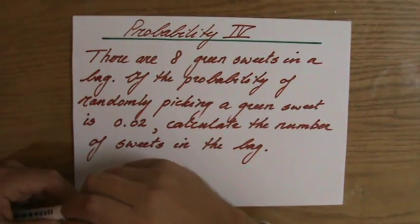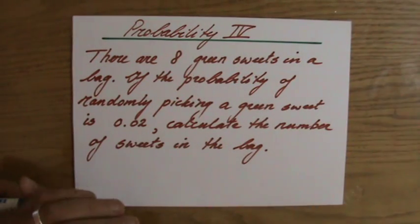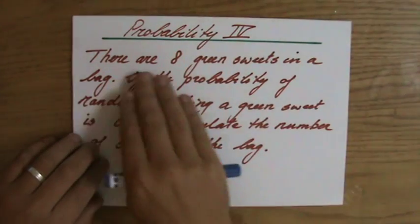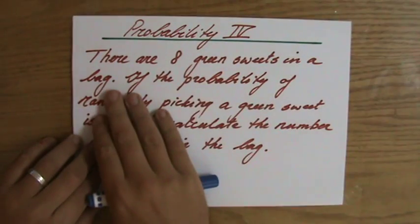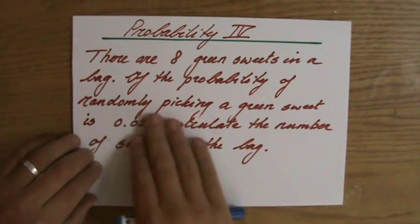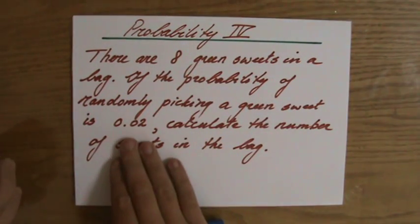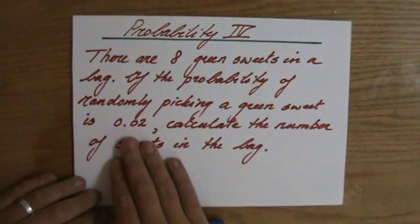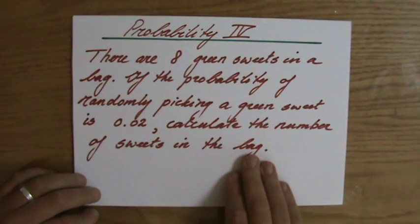Now this question approaches probability from a different angle. We're not really going to calculate probability now. Let's have a look at what it says. It says there are eight green sweets in a bag and if the probability of randomly picking a green sweet is 0.02, calculate the number of sweets in the bag.